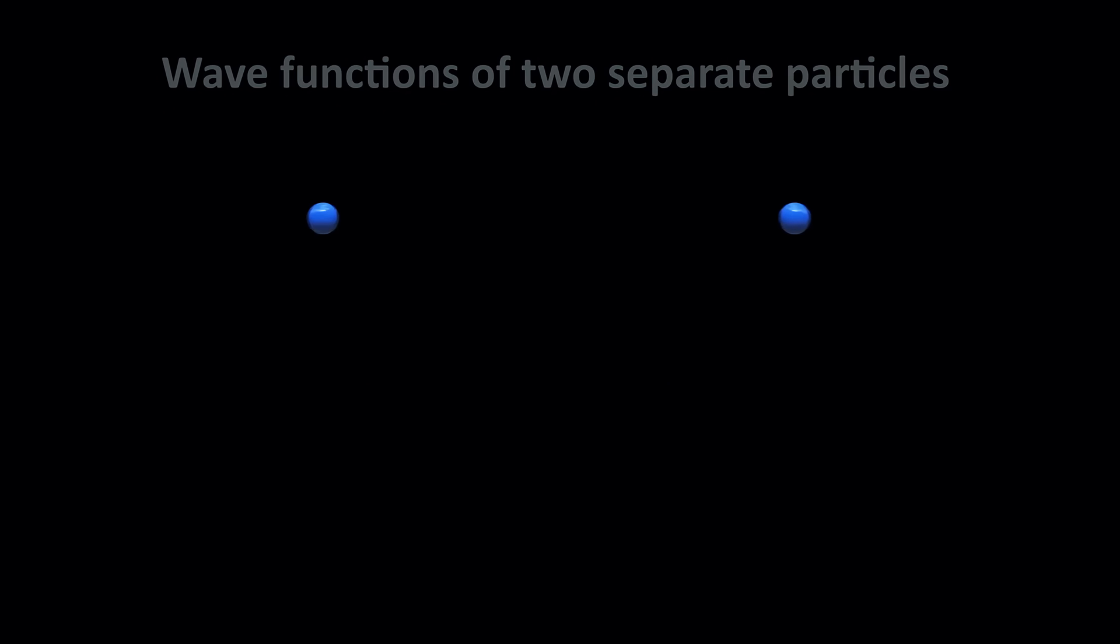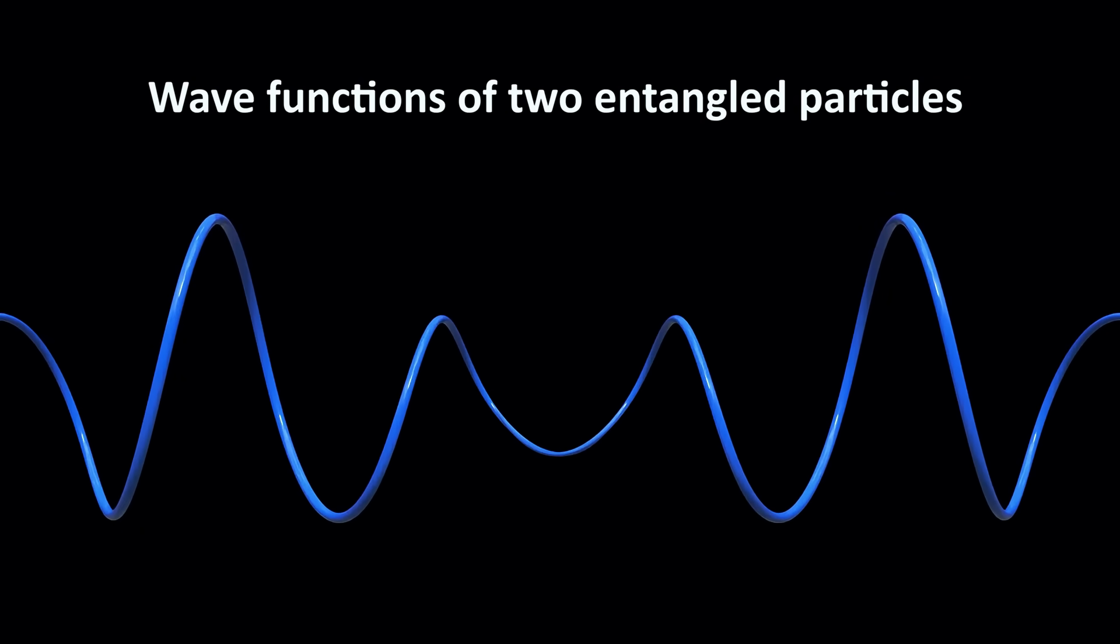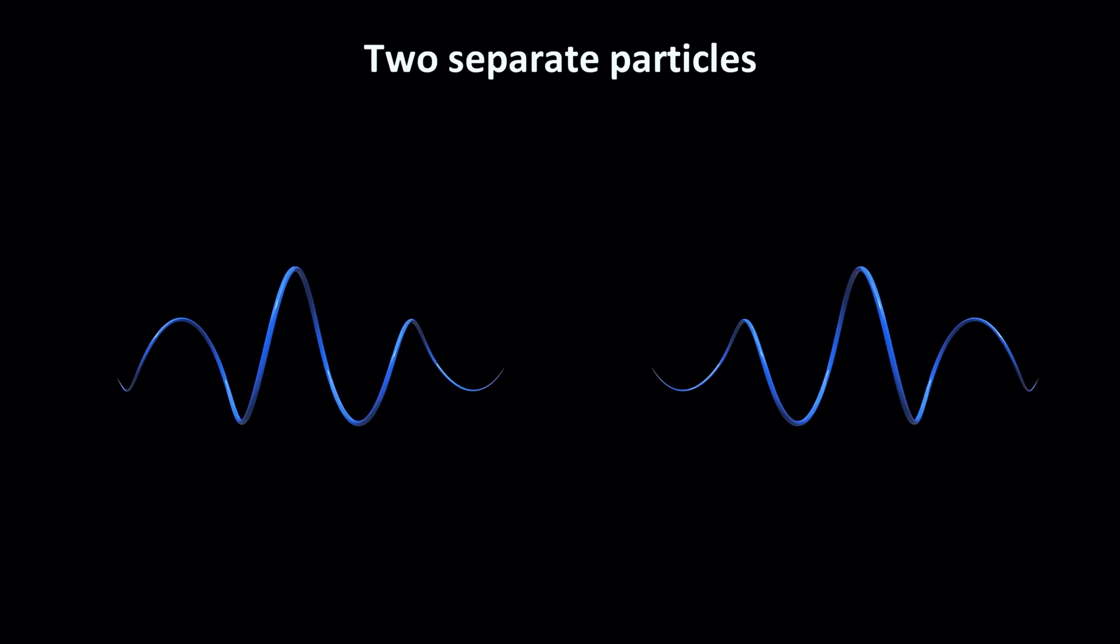But this does not mean that there is any faster than light communication or causal connection between the two particles. It just means that certain conserved quantities, like the total energy or the total angular momentum of the system, exists without being localized to either particle. When we measure both particles, we find that the two measurements are correlated and together yield the system's conserved quantity. It's a property of the system as a whole.